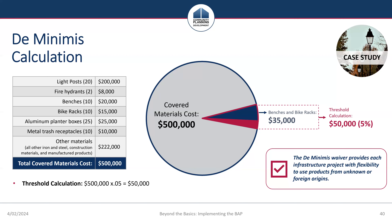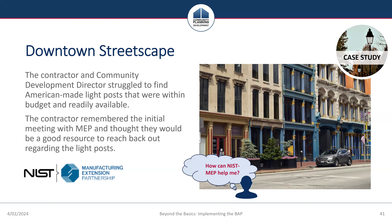HUD strongly recommends that all grantees calculate the de minimis limit and apply it strategically before reaching out to supplier scouting services such as the MEP network or before applying for a project-specific waiver. Grantees should maintain documentation of the cost of products claimed under the de minimis waiver, as well as the total cost of materials, to show compliance. One remaining issue in the downtown streetscape case study is that the contractor and community development director struggled to find American-made light posts that were within budget and readily available, so they reached back out to MEP for assistance.